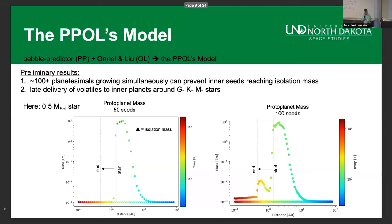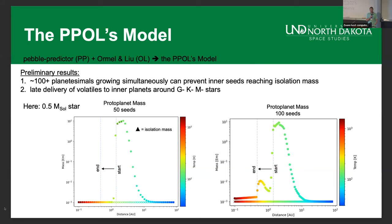I'm combining two models — one called Pebble Predictor (PP) and one from Ormel and Liu accretion recipes — combined to make the Pebbles model, which is what I am building. Preliminary results are interesting: if you grow hundreds of planetesimals at the same time, you can actually promote growth of planets inside the snow line. And under certain conditions, you can get a late delivery of volatiles to inner planets around GK and M stars. Come find me at the UND green poster if you want to know more. Thank you.